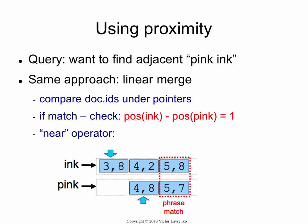If the document IDs don't match, you increment the smaller one. So now I have a pointer to this entry and to this entry — I'm in document number four. I check: do the document IDs match? Yes, they do. So then I go on to the next check: you compare the positions of 'ink' and 'pink' in that document. To get the phrase 'pink ink', I need 'ink' to be in a position which is one larger than 'pink'. In this case, 'ink' occurs in position two and 'pink' occurs in position eight — they're six words apart, not adjacent. So if that condition isn't satisfied, you increment the smaller pointer.